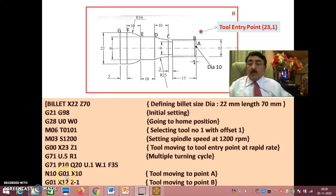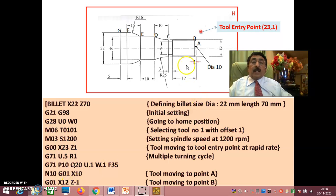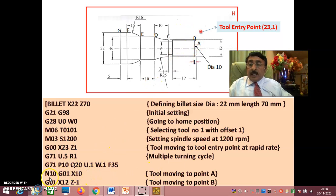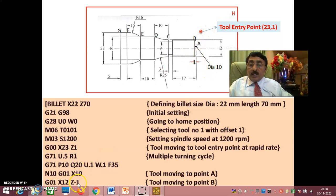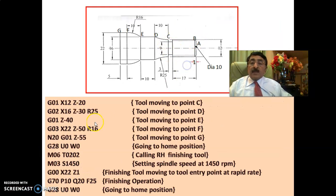Now N10: G01, X10 — tool coming to point A. Then G01, X12, Z-1 — tool coming to point B. Then G01, X12, Z-20 — tool coming to point C. The principle behind manual part programming is: if you give the coordinates of A, B, C, D, E, F, G in terms of X and Z, the profiling is done automatically. Between N10 and N20 is the actual program for the entire profile.